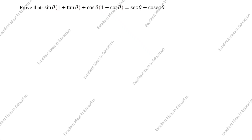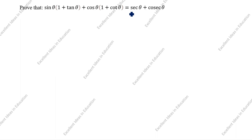Hi friends, welcome to my channel Excellent Ideas in Education. Today we are going to solve this trigonometry problem: prove that sin θ (1 + tan θ) + cos θ (1 + cot θ) = sec θ + cosec θ.